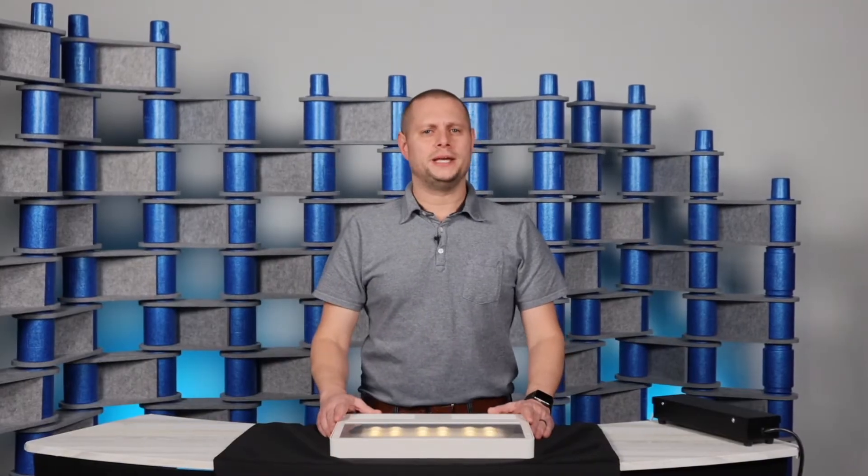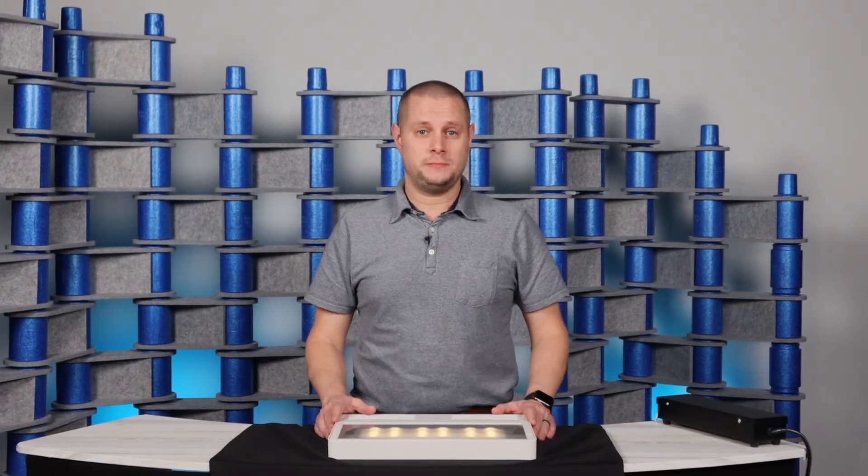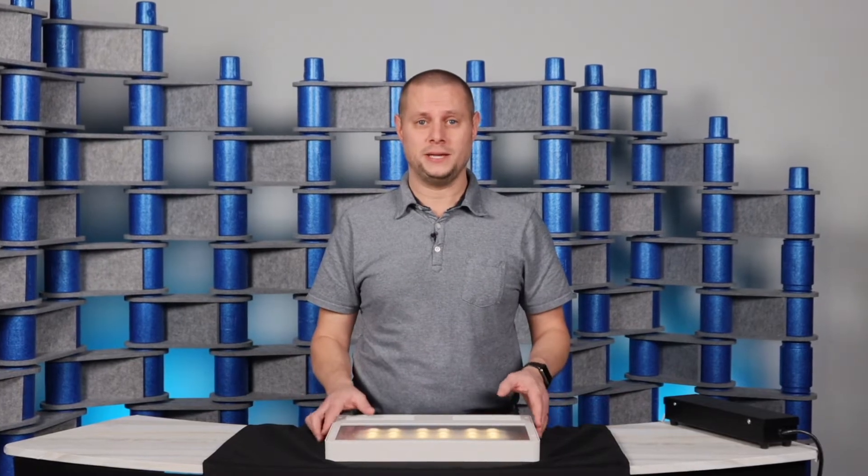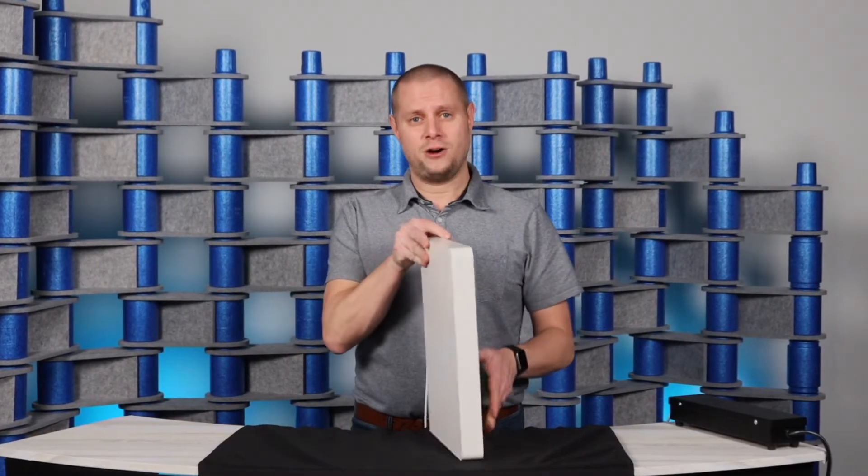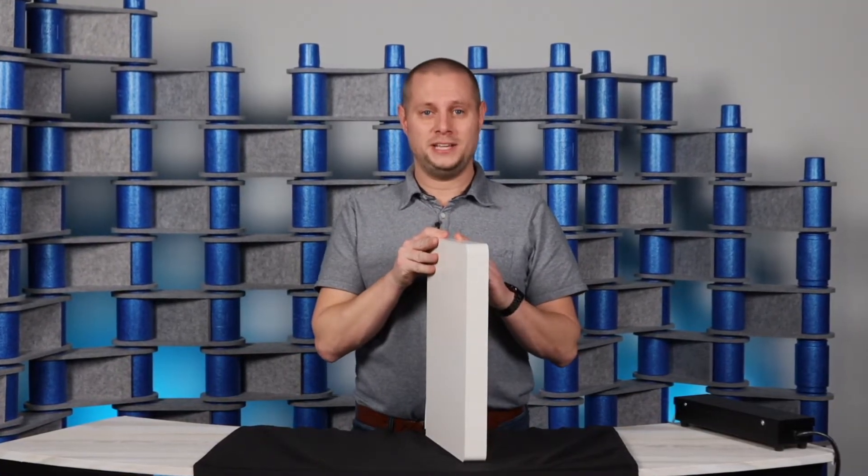The SPI Echo Blade is a super thin discrete asymmetric luminaire that provides a ton of light to the space. It is by far the slimmest high output asymmetric on the market.